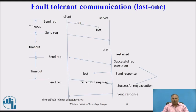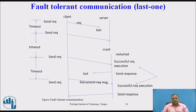Fault tolerant communication. The client sends a request to the server, but the message gets lost. The message is resent from client to server. The server may crash upon receiving it, so the message is sent again. This time the message reaches the server successfully and execution takes place, but the response message gets lost. The message is resent again, and this time the message reaches the server, execution takes place, and the response is successfully sent to the client. This last successful transmission is called fault tolerant communication.